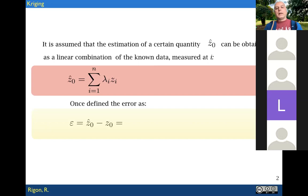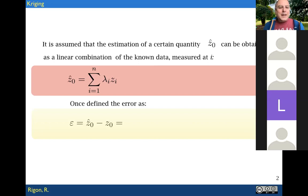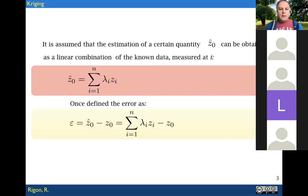The problem here is that we get the measures Z_i somewhere, but we don't know the lambda_i's. So the first thing is to define the error. The error epsilon is equal to hat Z0 minus Z0, where Z0 is the known value of the measure. If we substitute the expression we gave for hat Z0, we have the summation over i from one to n of lambda_i times Z_i, minus Z0.